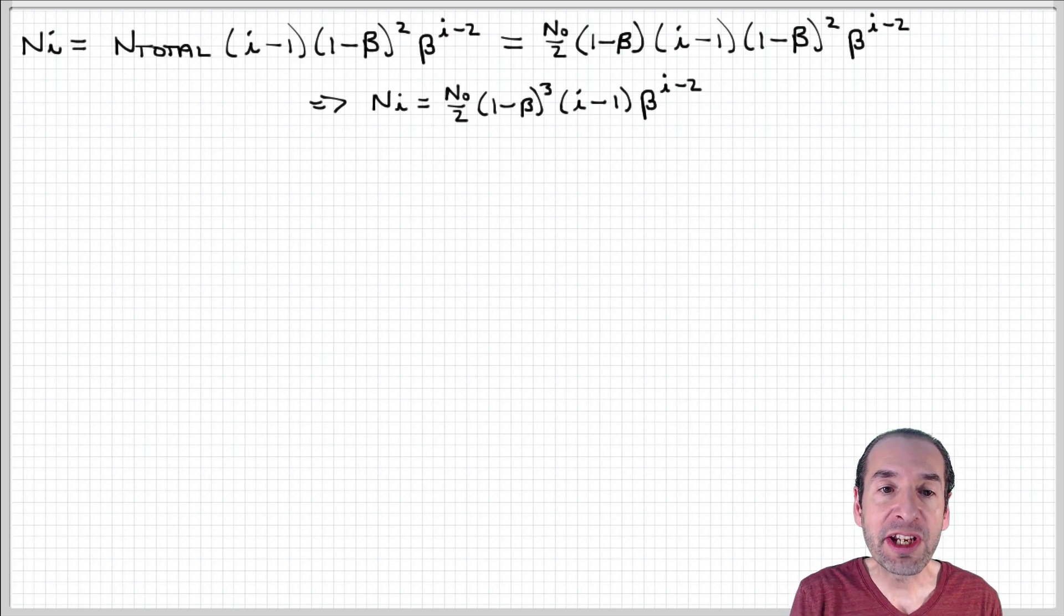Remember that we were stuck with this term here, Ni, which represents the number of molecules of length i, because it involved this term N total, which is the total number of dead polymer in the system.